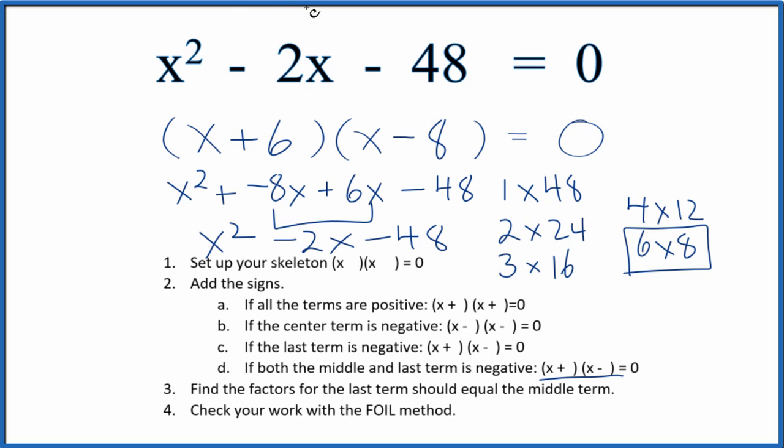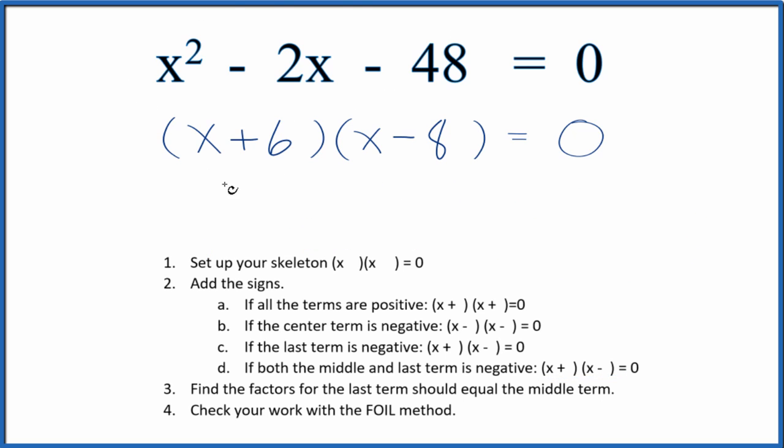Let's find the values for x that make this equal zero. If x plus 6 equals 0, then x equals negative 6. If x minus 8 equals 0, then x equals 8. If you substitute negative 6 or 8 for x, the equation will equal zero, confirming our solution.